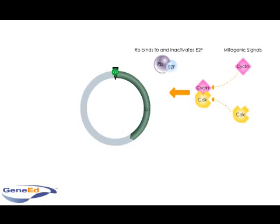PRB acts as a break by binding to and blocking the activity of another protein, E2F. E2F is required to turn on many genes involved in cell cycle progression.